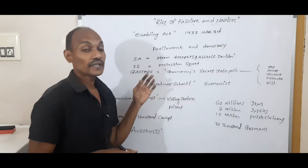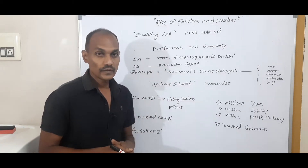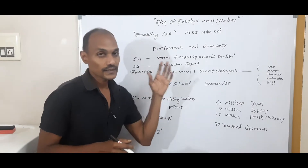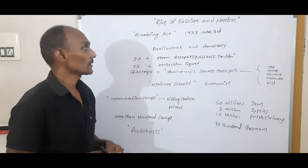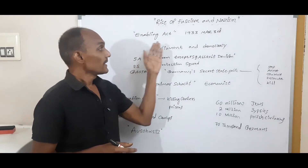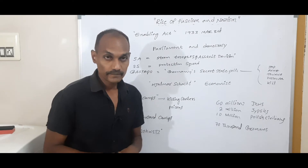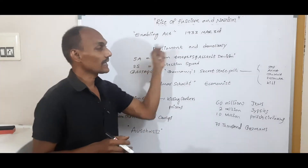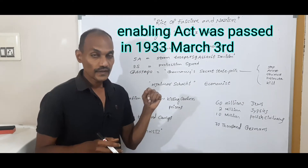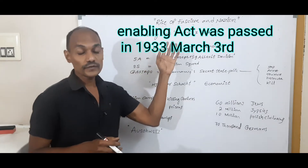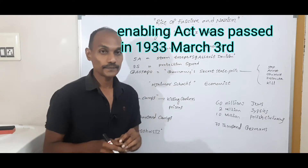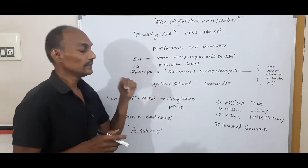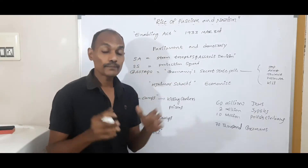Eventually Hitler became Chancellor and fulfilled his dream. When he became Chancellor, he immediately took some decisions. He introduced a new act — the Enabling Act — which was passed on March 3rd, 1933.